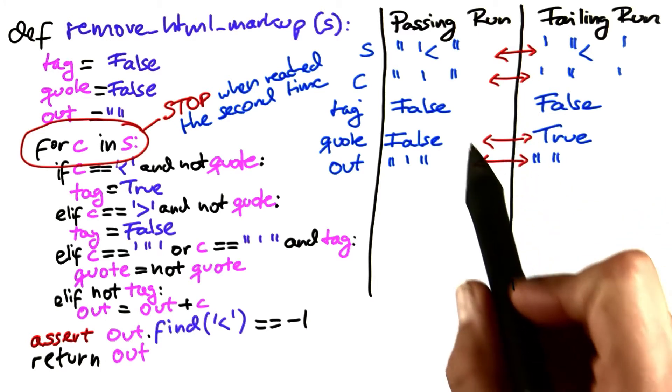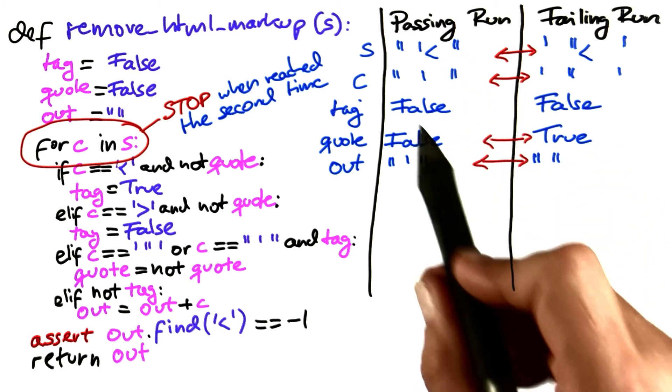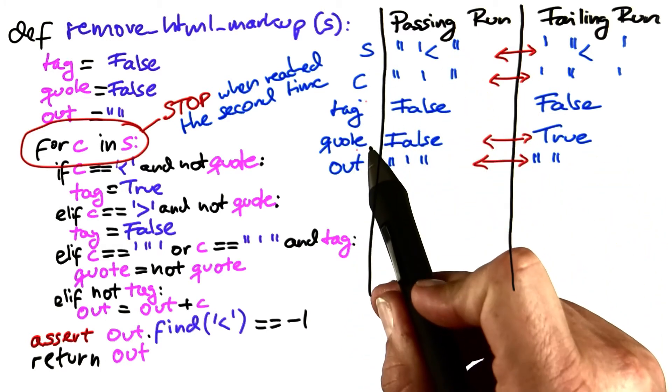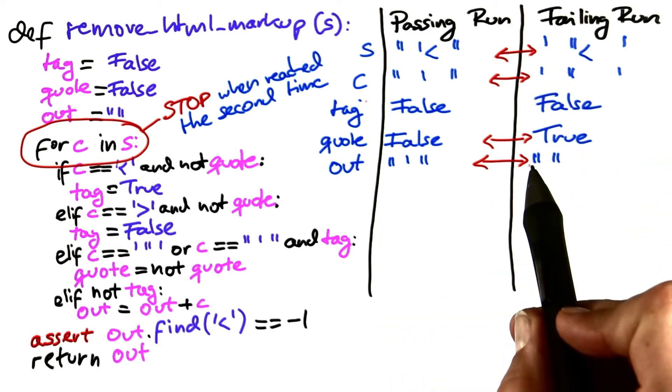What you see at this point is that four variables, namely s, c, quote, and out, all have different values.